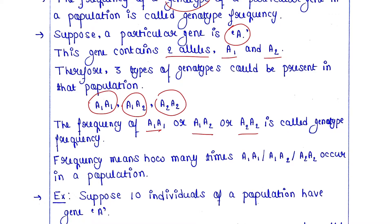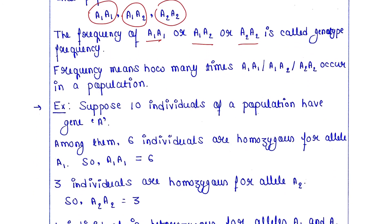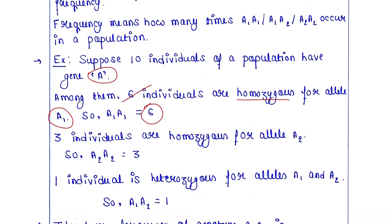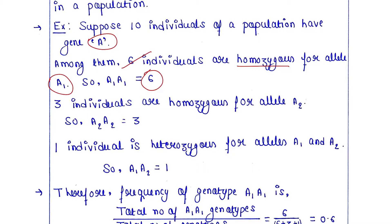Frequency means how many times A1A1, A1A2, or A2A2 occur in a population. For example, suppose 10 individuals of a population have gene A. Among them, six individuals are homozygous for allele A1, so the A1A1 genotype is present six times. Three individuals are homozygous for allele A2, so A2A2 is present three times. One individual is heterozygous, so A1A2 is present once.